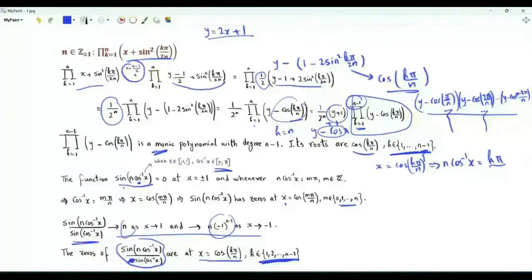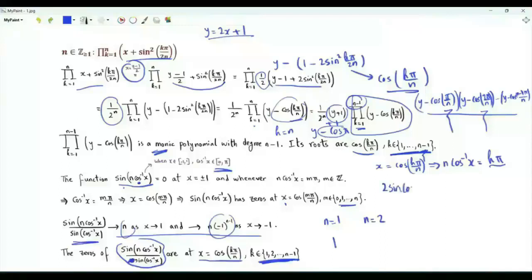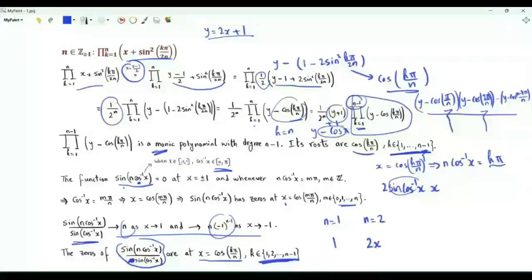What is this function exactly? Some of you may recognize it as the Chebyshev polynomial of the second kind. But let's discover that it is indeed a polynomial without demanding any specific background. If n equals 1, we get 1. If n equals 2, we have sine of 2 times cosine inverse x. The numerator is 2 sine(cosine inverse x) times cosine(cosine inverse x), which is x. We divide by sine of cosine inverse x, leaving us with 2x.